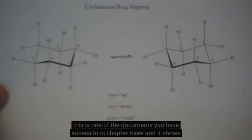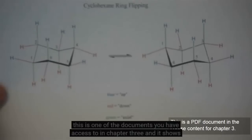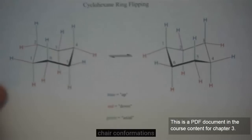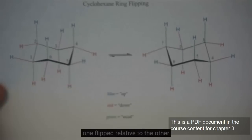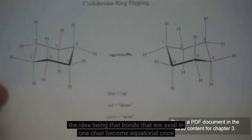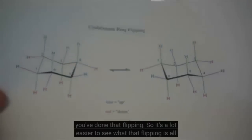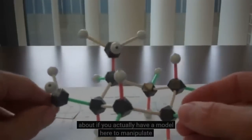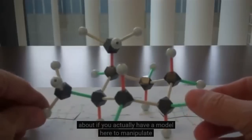What we try to do when we draw chair conformations on paper is represent this model as best we can, even when we're looking at something that's two-dimensional. This is one of the documents you have access to in chapter three, and it shows for plain old cyclohexane two versions of its chair conformations, one flipped relative to the other. It's a lot easier to see what that flipping is all about if you actually have a model here to manipulate.